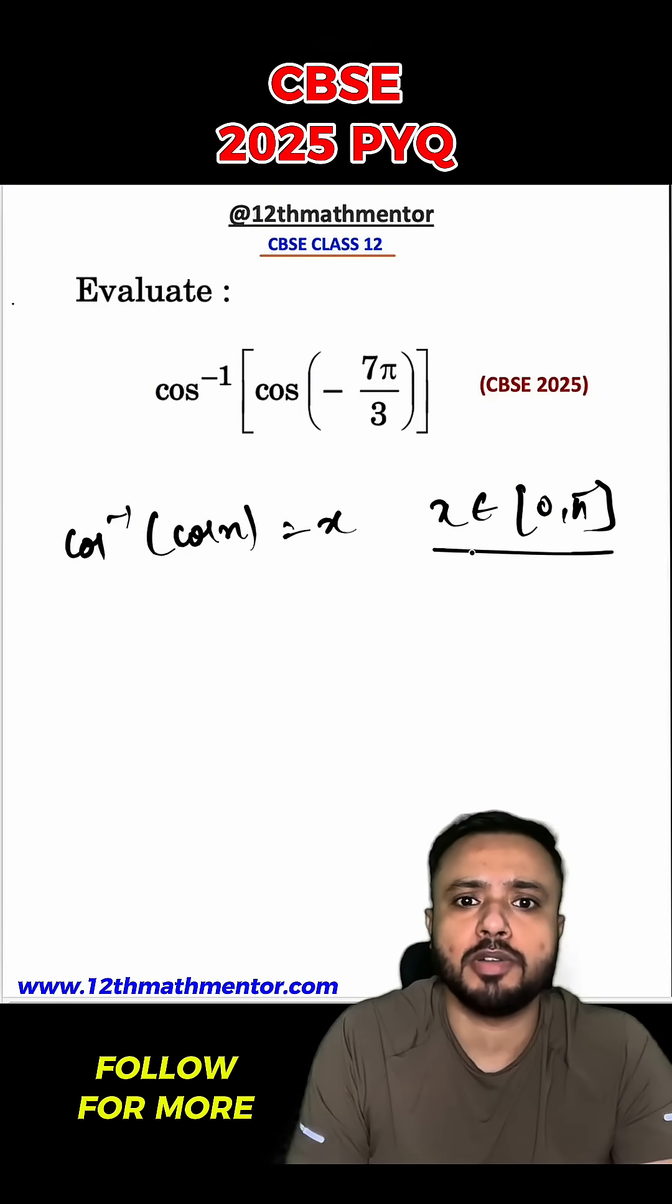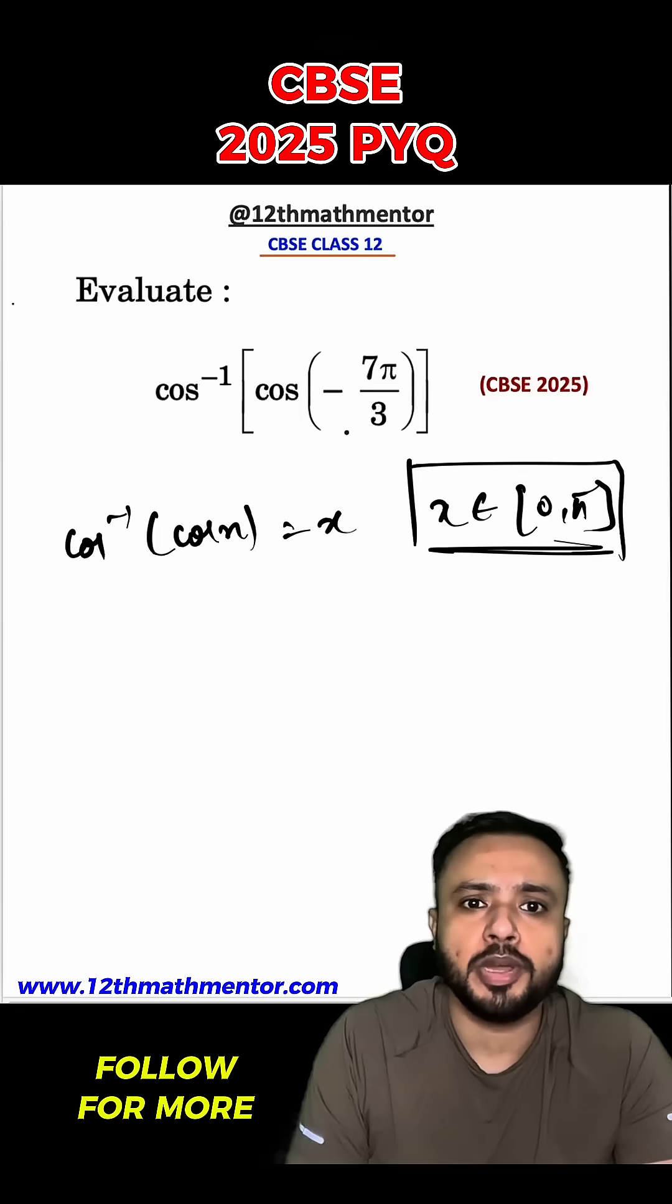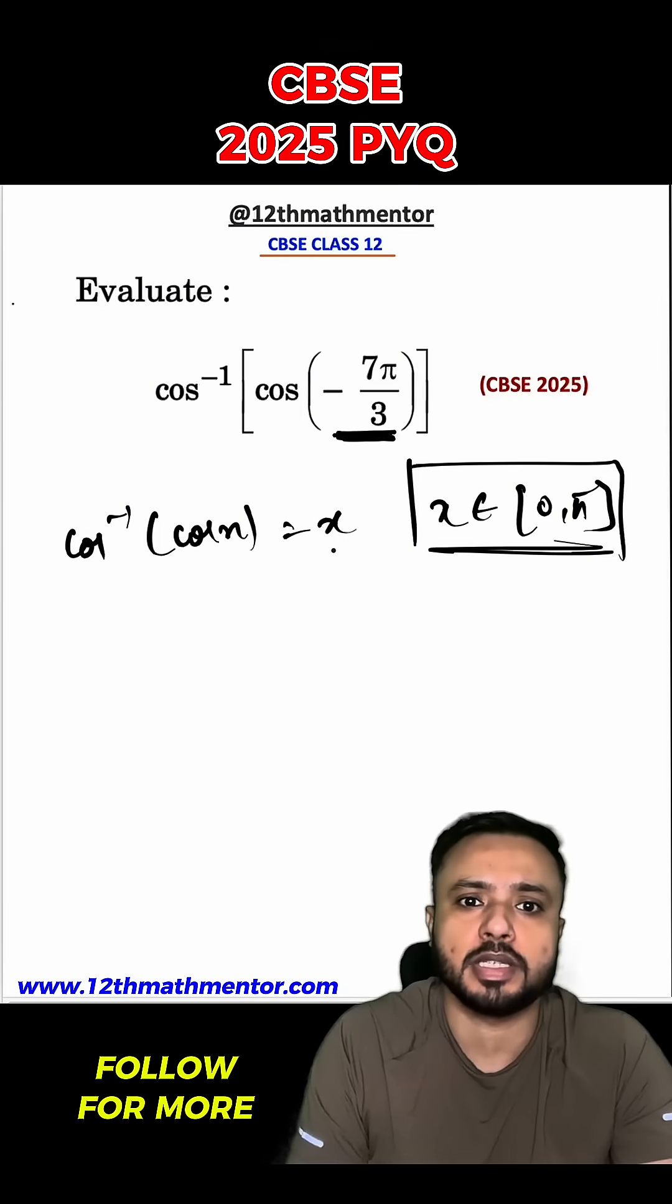This is basically the principal value branch of cos inverse x function. So we have to take this negative 7 pi by 3 under 0 to pi in any way. Then only we can write it as cos inverse cos x as x.